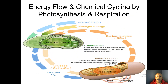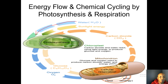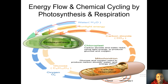Now let's connect the two concepts and look at energy flow and chemical cycling by photosynthesis and respiration. In the chloroplast, carbon dioxide and water react using light energy to produce glucose and oxygen. Here are our three reactants for photosynthesis: water, sunlight energy, and carbon dioxide. It's worth noting that this carbon dioxide comes from other organisms, or it can come from power plants or factories that give off carbon dioxide as a byproduct.